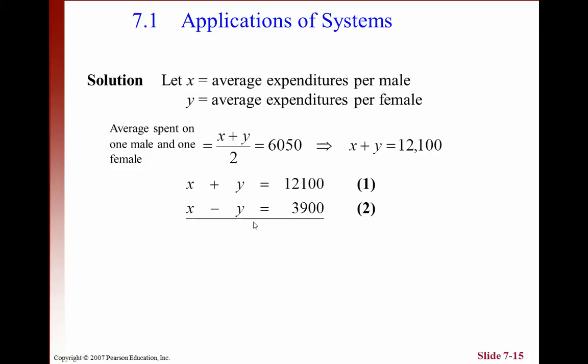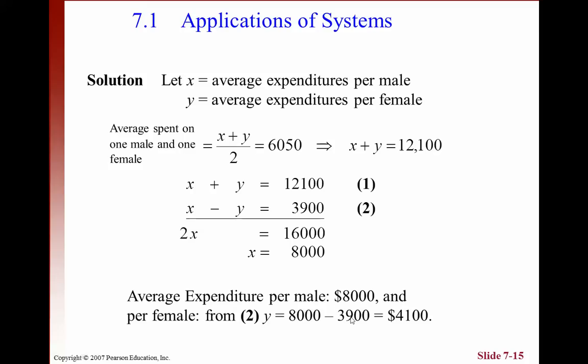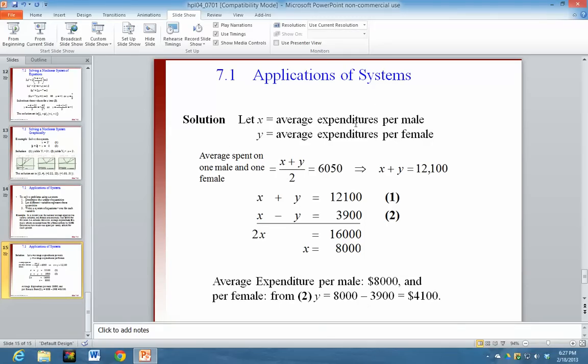This is set up great for elimination. We just add the two equations together. Get 2x equals 16,000. So x equals 8,000. That's how much they spent on each male athlete. And so subtract 3,900 from that and you get how much they spent on each female athlete. So that's a quick review of systems of linear equations and how to solve the kind of problems you'll see in your book. Answer the questions on the forum and I'll see you guys in class tomorrow. Thank you.